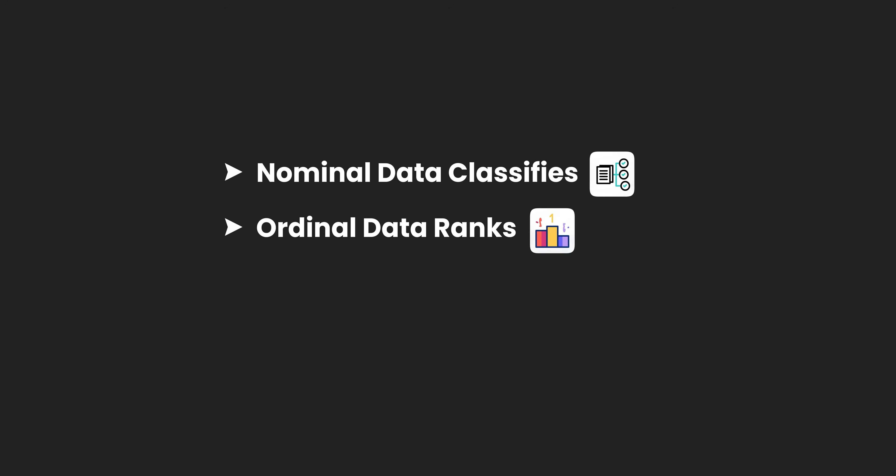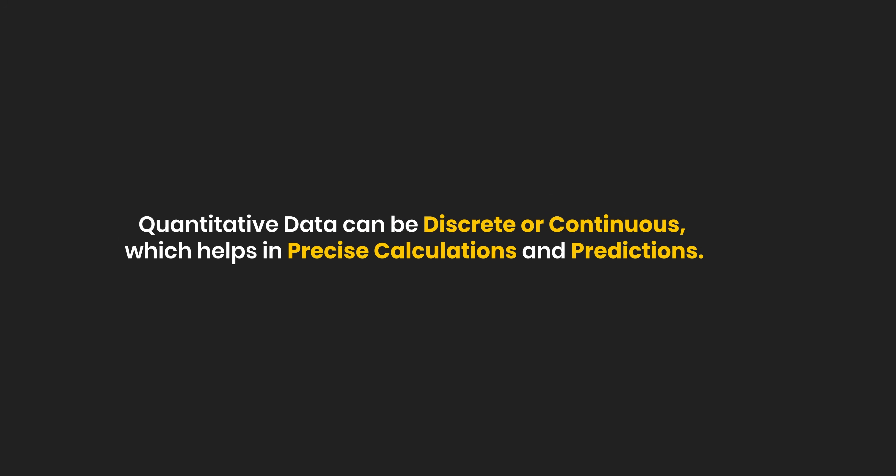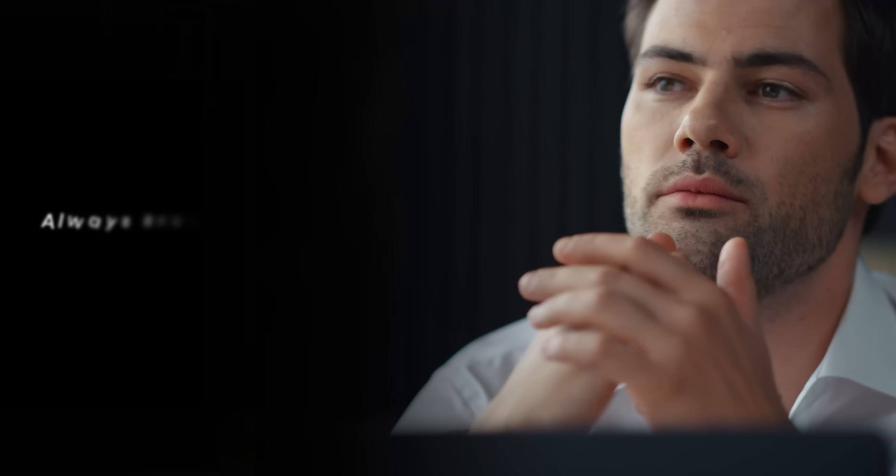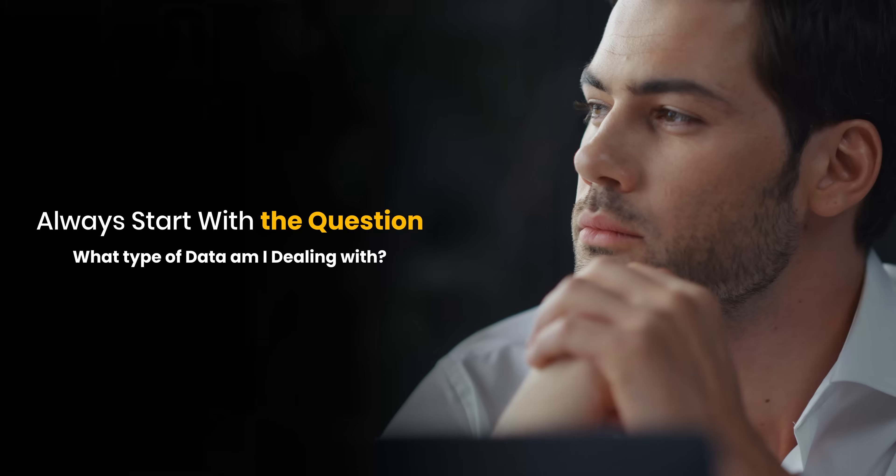To summarize, understanding types of data in statistics is not just a theory topic — it is the foundation of meaningful analysis. Nominal data classifies, ordinal data ranks, and interval or ratio data measures. Quantitative data can be discrete or continuous, enabling precise calculation and prediction. Once you identify the right type, you can choose the right summary, the right graph, and the right statistical test — whether you are working in Excel, Power BI, or Python for data science. If you ever want to master statistics or become a data scientist, always start with the question: what type of data am I dealing with? Because once you know that, the rest of the analysis flows naturally.